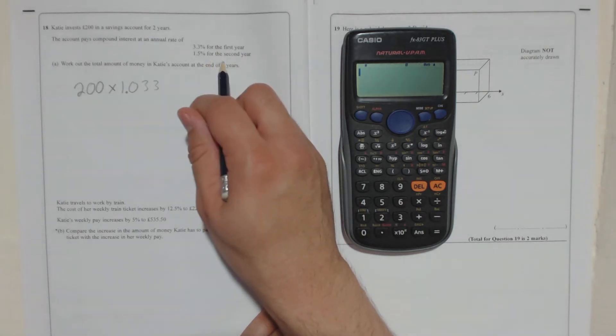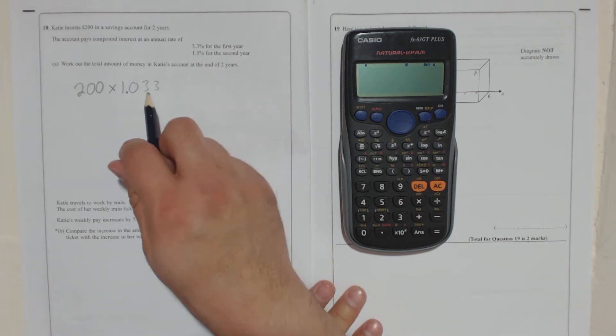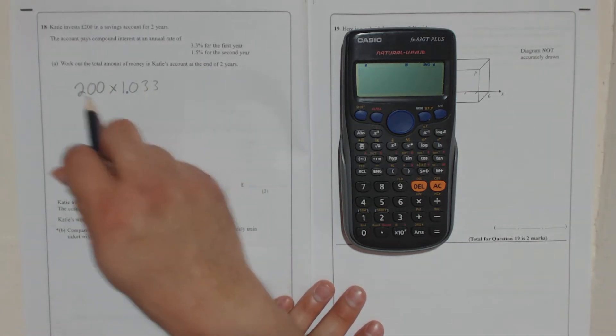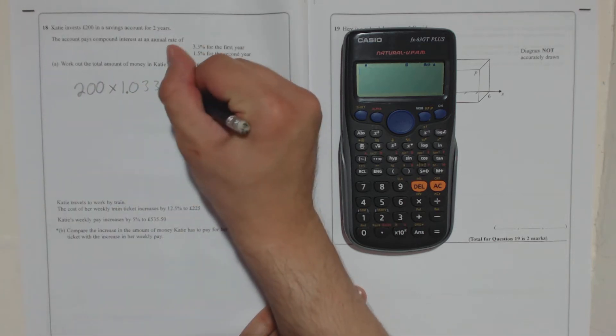Now, the second year is an increase of 1.5%. So this is after one year, so whatever the answer is to that, that's our new 100%. So if I want to increase this by 1.5%, I have to take that and times it by...